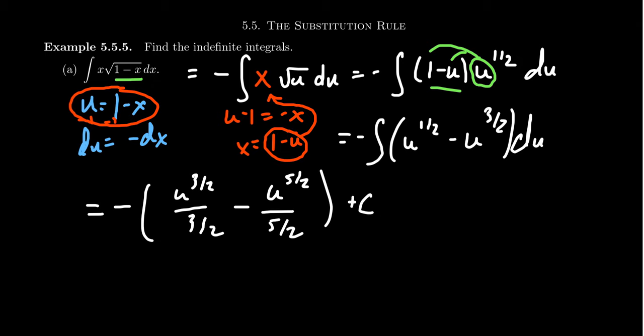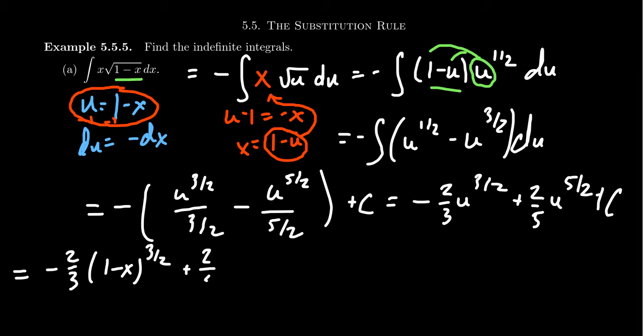And so then if you divide by fractions, of course, you're just multiplying by the reciprocal. So you're going to get -2/3 u^(3/2) plus, I'm distributing the negative sign throughout there, plus 2/5 u^(5/2) plus a constant. And then remove the u and go back to the original variable x there. You're going to get -2/3 times (1-x) raised to the three halves power.